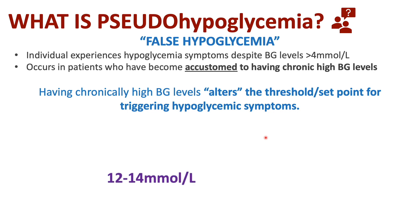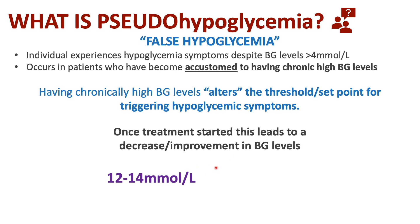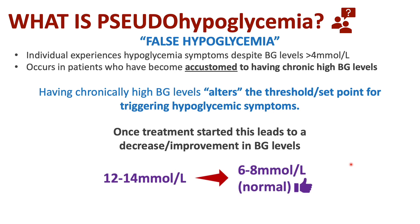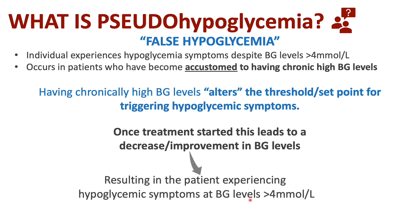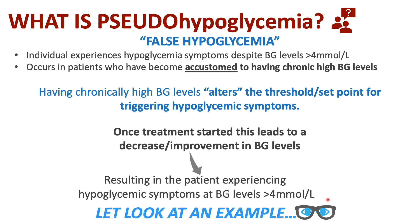For example, if a person has chronic high blood glucose levels ranging from 12 to 14 millimoles per liter, when they start treatment, this leads to a decrease or improvement in their blood glucose levels. So now the glucose levels may be between 6 and 8 millimoles per liter, which is normal. But for this specific individual, 6 to 8 is what's triggering the hypoglycemic symptoms, because the person's body was so used to having high blood glucose levels. This results in the person experiencing hypoglycemic symptoms even though the blood glucose levels are greater than 4 millimoles per liter.